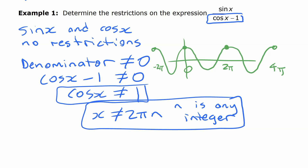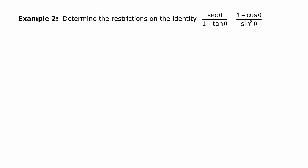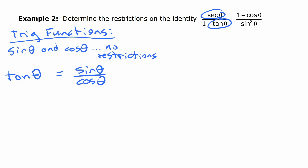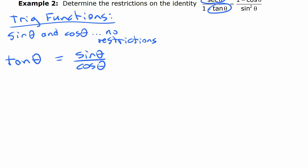Now we're going to look at a second example. This one is an identity — there are two sides to it. We're going to determine the restrictions on it, looking at the two different aspects involved. So the sine and cosine themselves have no restrictions. But the other functions involved — namely secant and tangent — do have some restrictions. Tangent equals sine theta over cosine theta, so tangent is undefined where cosine — the denominator — is zero.